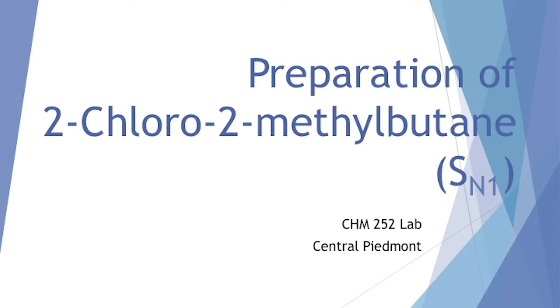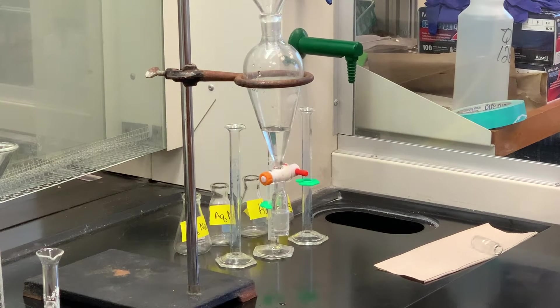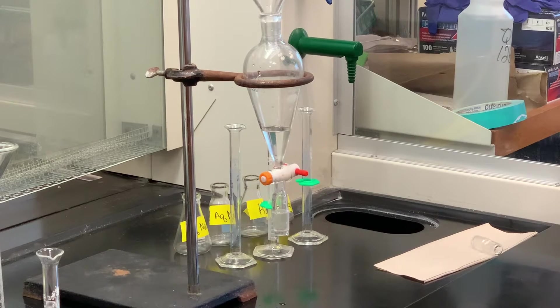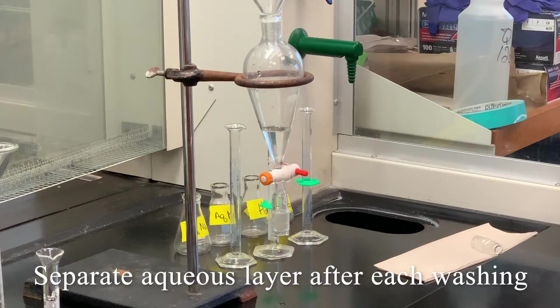So the next thing we're going to do is add 10 mls of saturated sodium chloride solution to that. We're going to use aqueous sodium chloride, sodium bicarbonate, and water. But each time we add one of those, we have to go back and separate the layers each time.